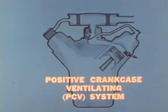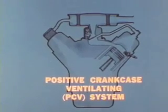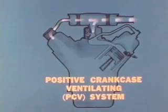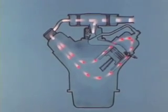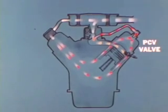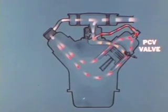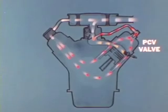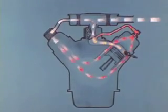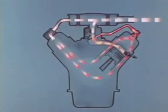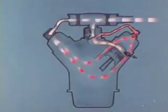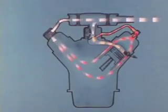In the positive crankcase ventilation or PCV system, incoming air picks up residual fumes and vapors inside the engine as it's drawn through into the intake manifold. The air passes out through the PCV valve and its hose, which is attached to the PCV connector at the carburetor. The PCV valve reduces ventilating airflow through the system at idle to keep it from leaning out the air-fuel mixture and increases the flow at higher engine speeds for maximum crankcase ventilation.